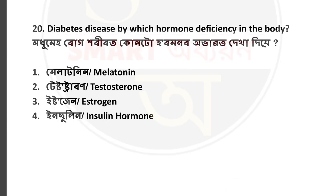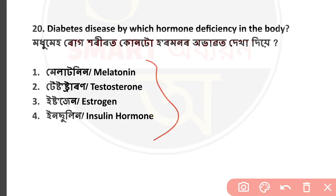Question number 20: Diabetes disease — by which hormone deficiency in the body does it appear? Those who know the answer, please comment below. There are four options given — choose your answer and comment. That's all for today's questions. If you liked this video, please like and comment. Thank you.